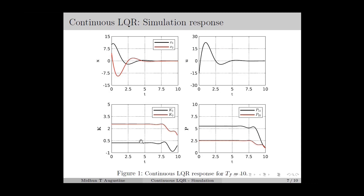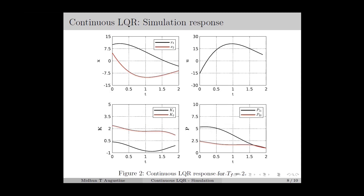At the end of the time horizon the feedback gain and cost matrix are time-varying, but they eventually converge to some fixed values. During the transient period of the states, the optimal feedback gain is fixed. This is because the LTI system selected is controllable and the time horizon is sufficiently large so that the feedback gain converges to fixed values. Figure 2 shows the response of the LQR for a time horizon tf equal to 2. Here the time horizon is small, so the feedback gain and cost matrices are time-varying over the entire time horizon.